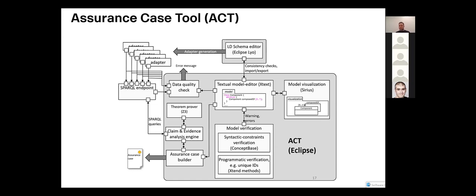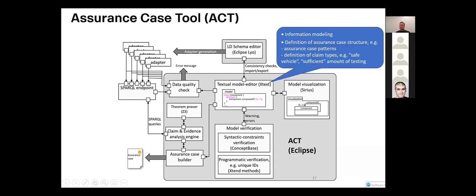And now given all this, this is a very high level architecture of how our assurance case tool currently works. It's under quite heavy development, but this is what we currently have. So we have the Eclipse Leo to create the schemas out of which we produce the adapters. The schemas are synchronized with a textual editor, textual model editor that we've developed in Xtext. So it's a place where you can write your claims, you can write these expressions you want to verify, you can create your structure of the assurance case and so on. And for example, what is a safe vehicle, that is what you would write here, or what is sufficient testing, that's what you would write here. And then of course, we can visualize what we write here in the textual language.